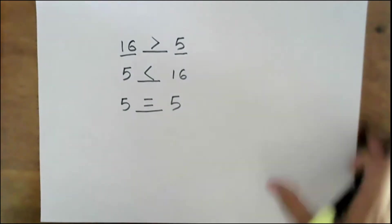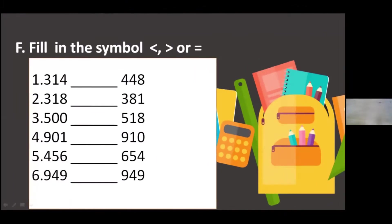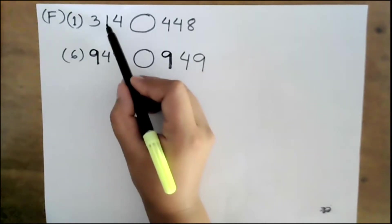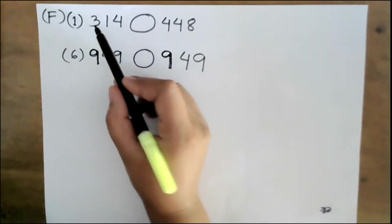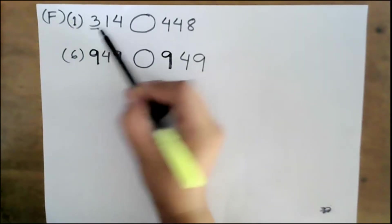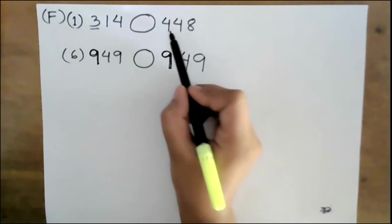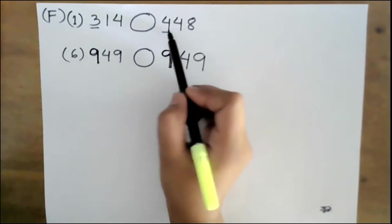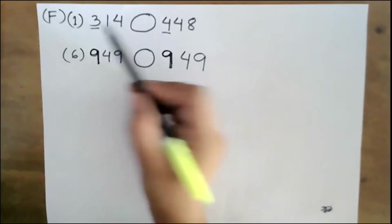Moving on to question number one: 314 and 448 — which one is greater? You have to look at the hundreds place. This is the ones place, tens place, and the hundreds place. The hundreds digit here is 3 and the hundreds digit here is 4, so 4 is greater than 3.